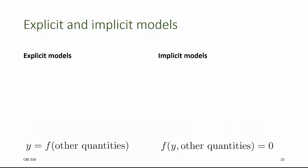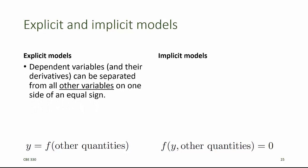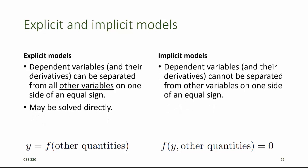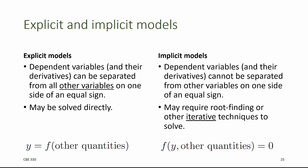Next, we'll consider whether model equations are explicit or implicit. Explicit model equations are ones for which the dependent variable and its derivatives can be separated from all other variables on one side of an equal sign. Explicit models can often be solved directly. For implicit model equations, on the other hand, the dependent variables and their derivatives cannot be readily separated from other variables on one side of an equal sign. They may require root finding or other iterative techniques to solve them.